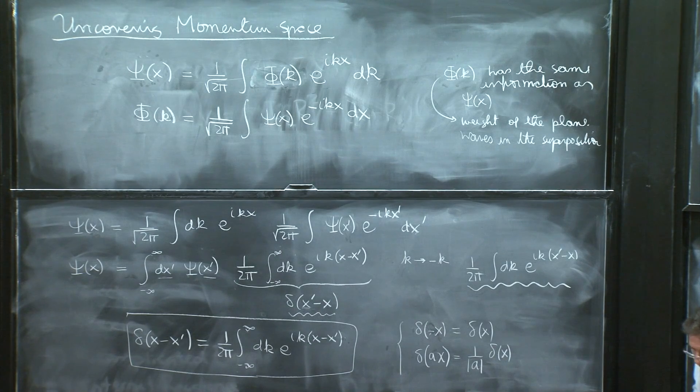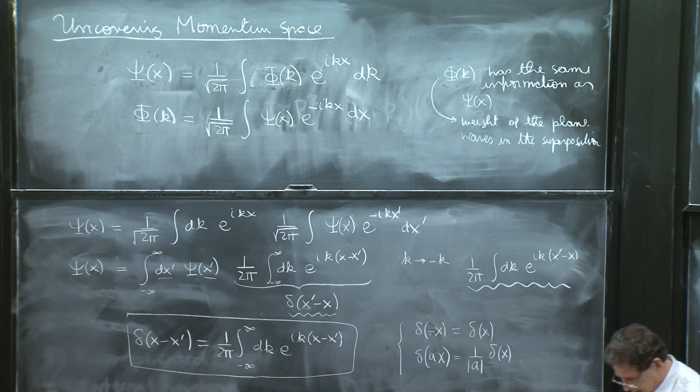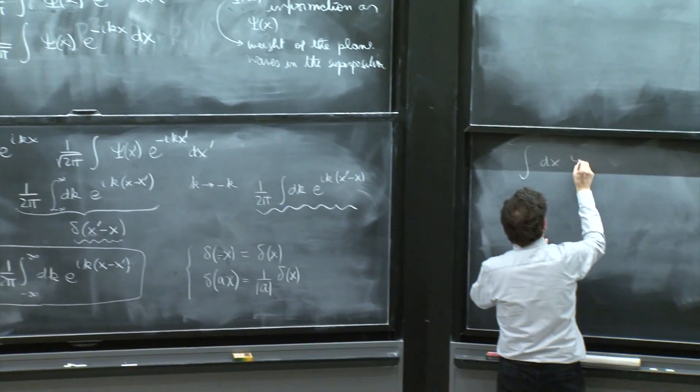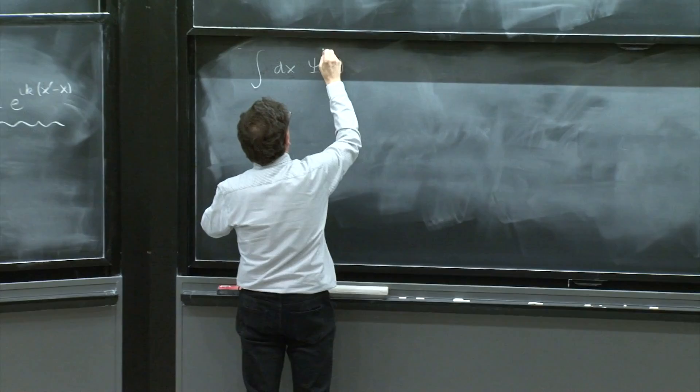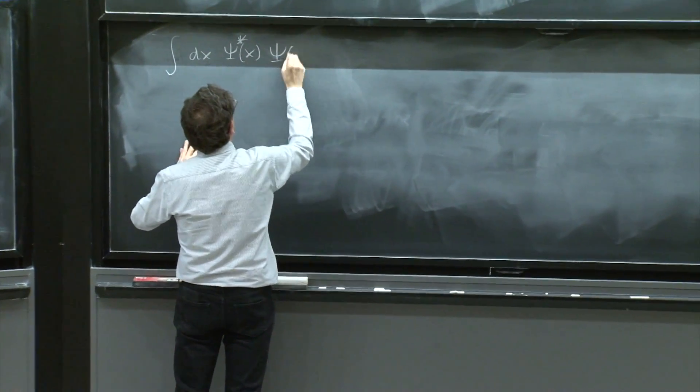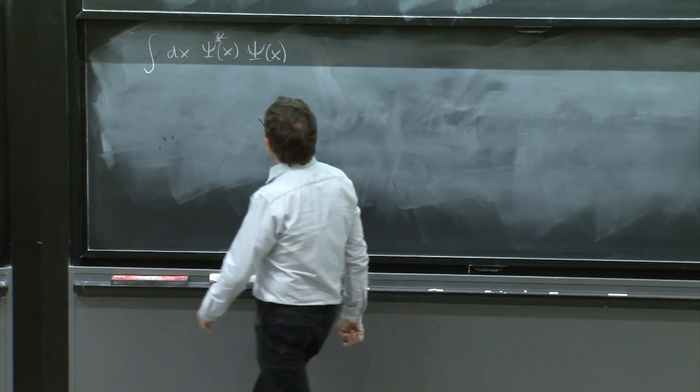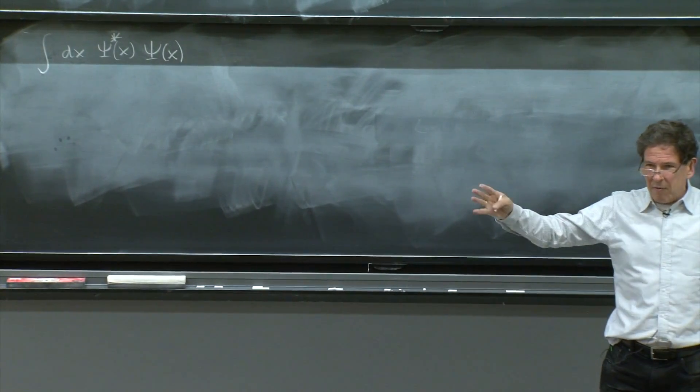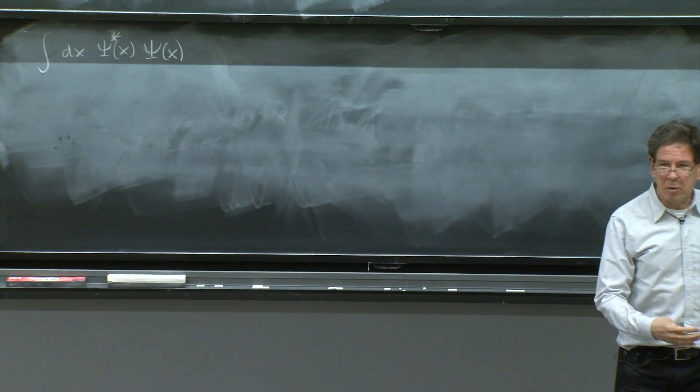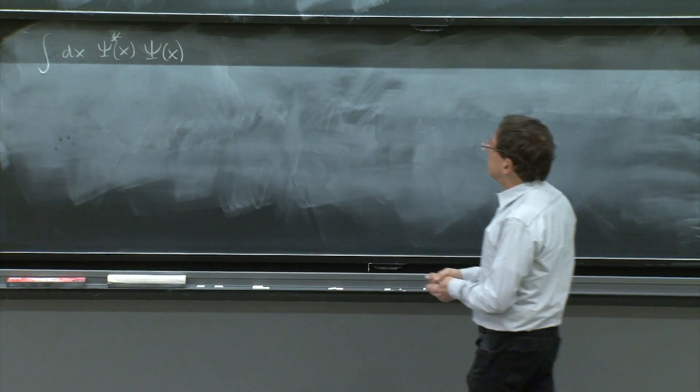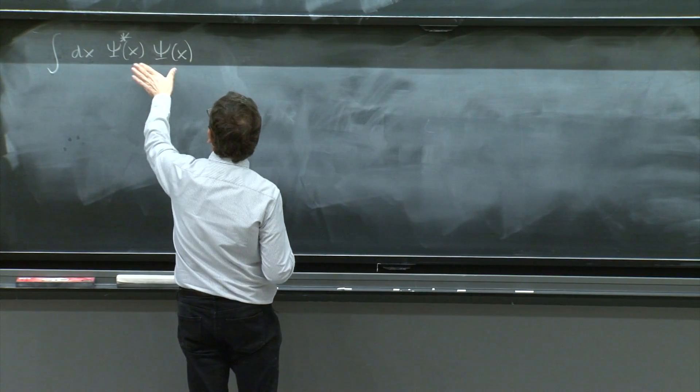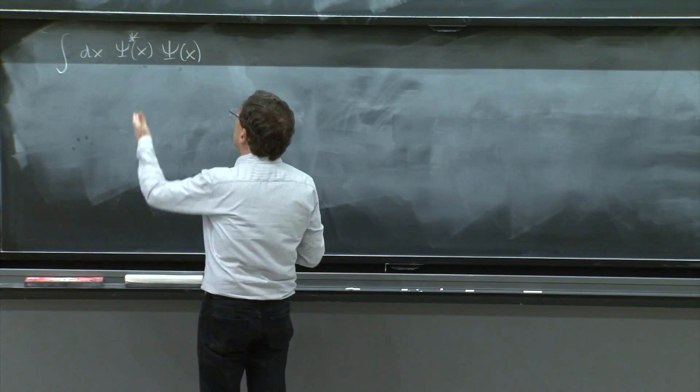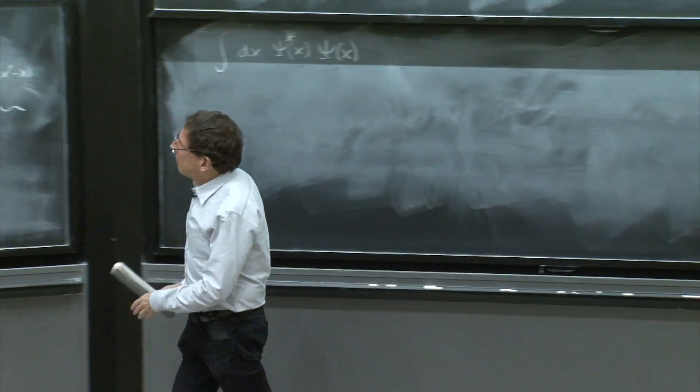So I will do this first. Let's think of integral dx psi of x star psi of x. Well, this is what we call the total integral for x squared, the thing that should be equal to 1 if you have a probability interpretation for the wave function. And what we would like to understand is, what does it say about phi of k?